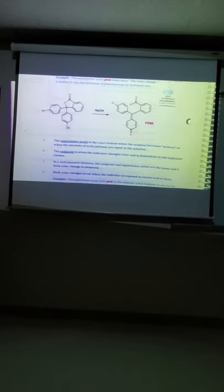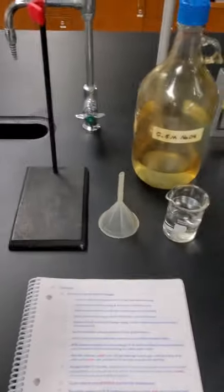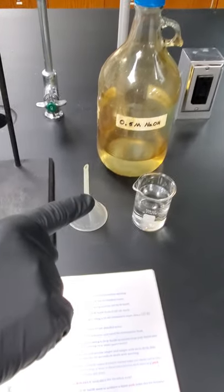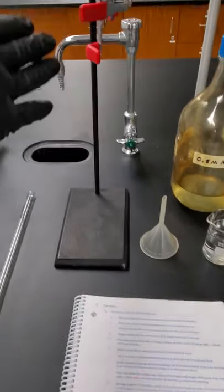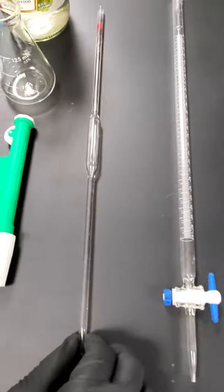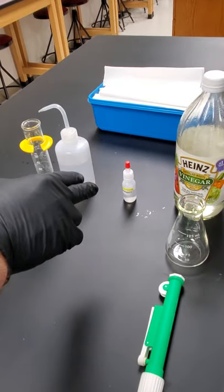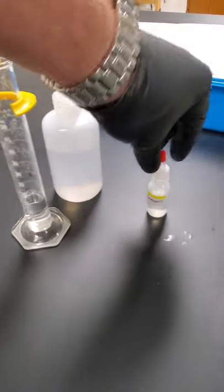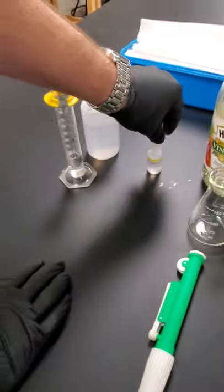Alright, so in lab, you can see our setup here. We have our base. I just transferred to a smaller container just like in our safety video. We have our funnel. We have our ring stand and burette clamp. We have our burette, our pipette, our pipette pump, Erlenmeyer flask with our vinegar, our phenolphthalein indicator, and then our water.